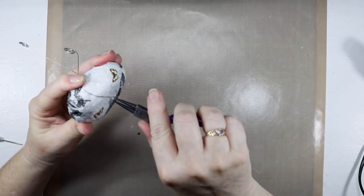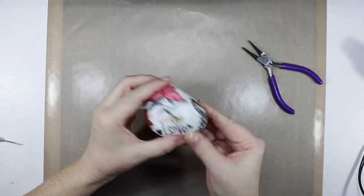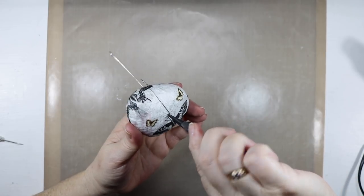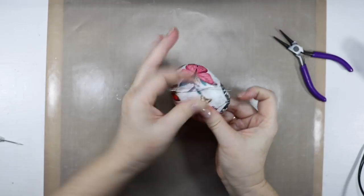So to tighten the wire to the rock I'm just getting my round nose pliers and on the bottom I will just grab the wire and just give it a bit of a twist and this will tighten the wire around the rock.